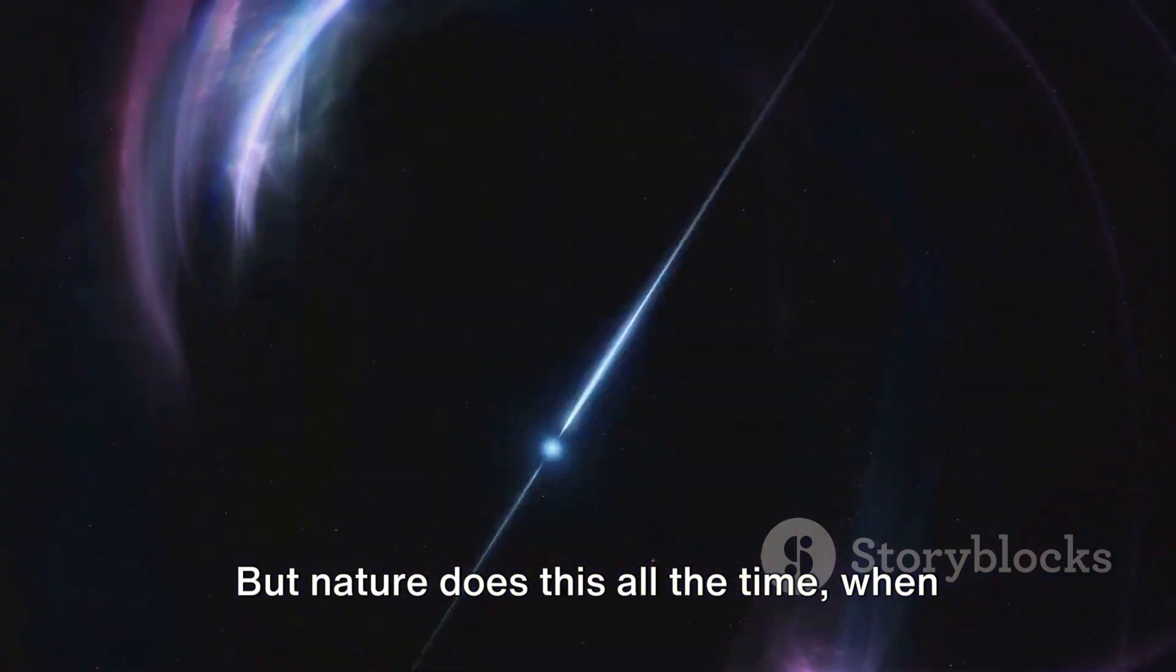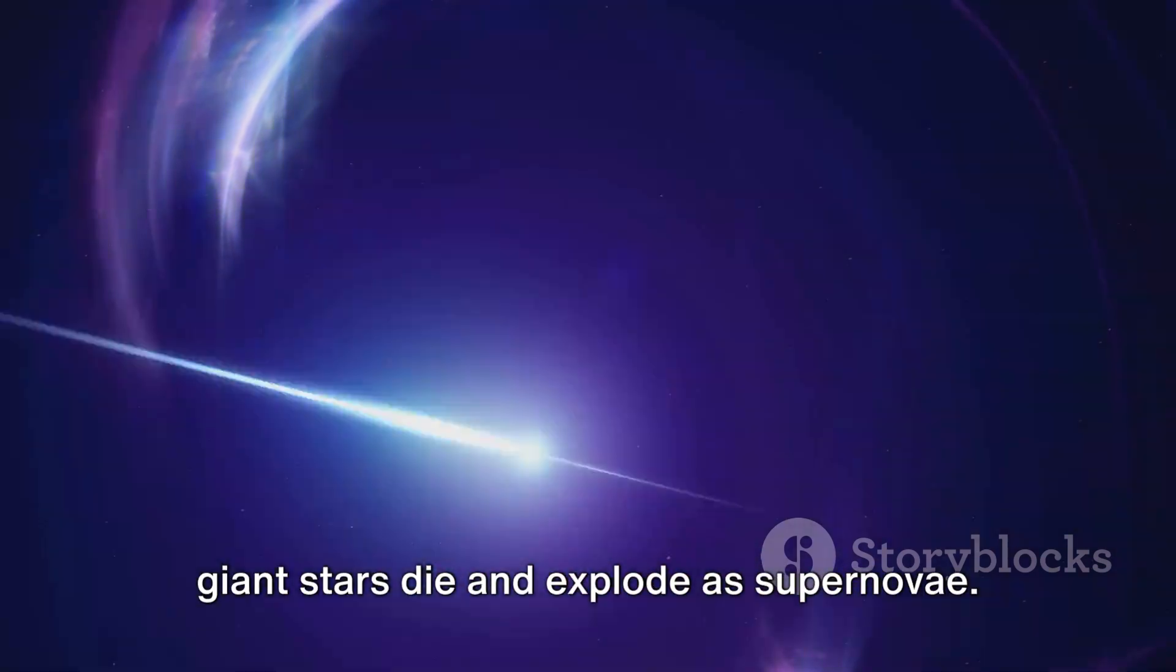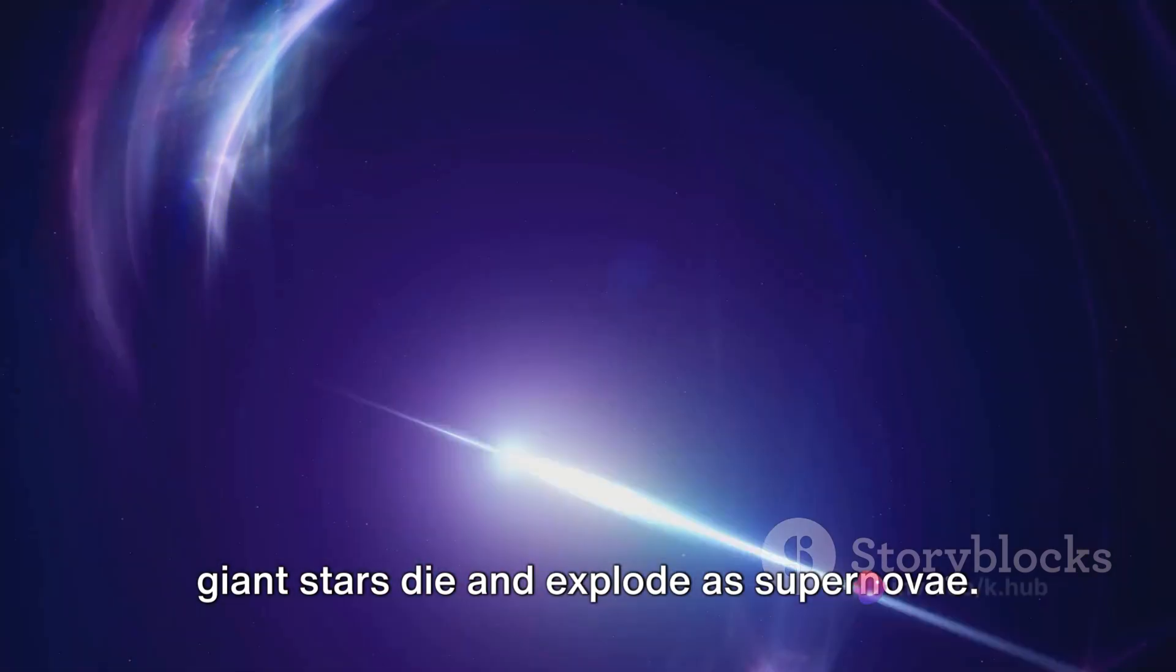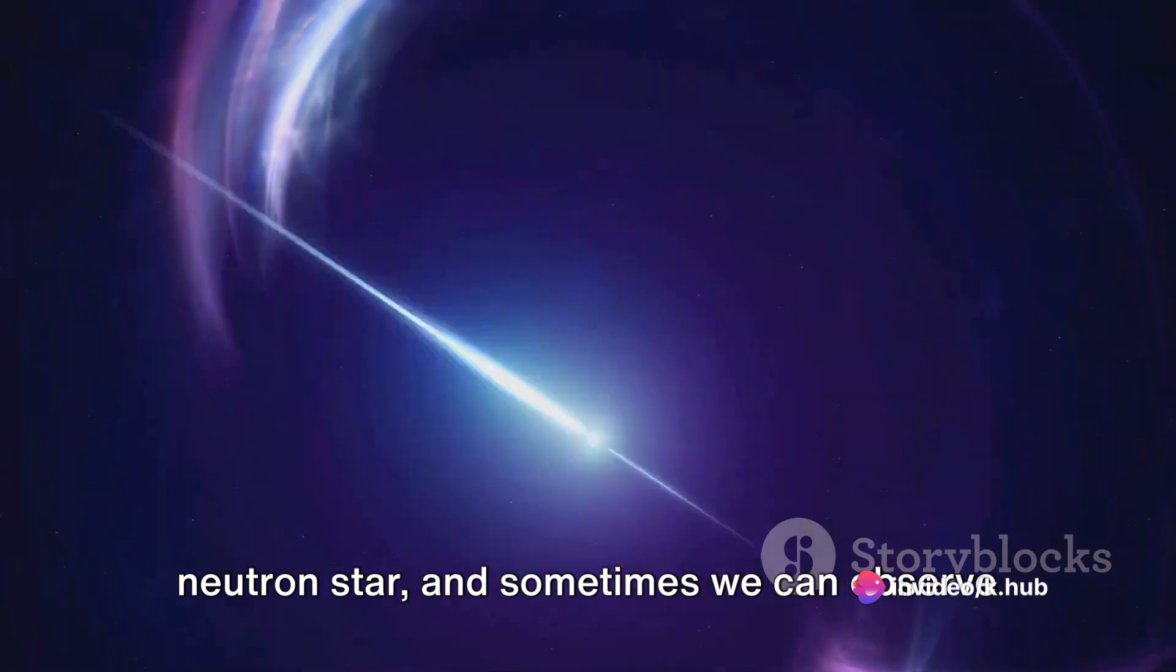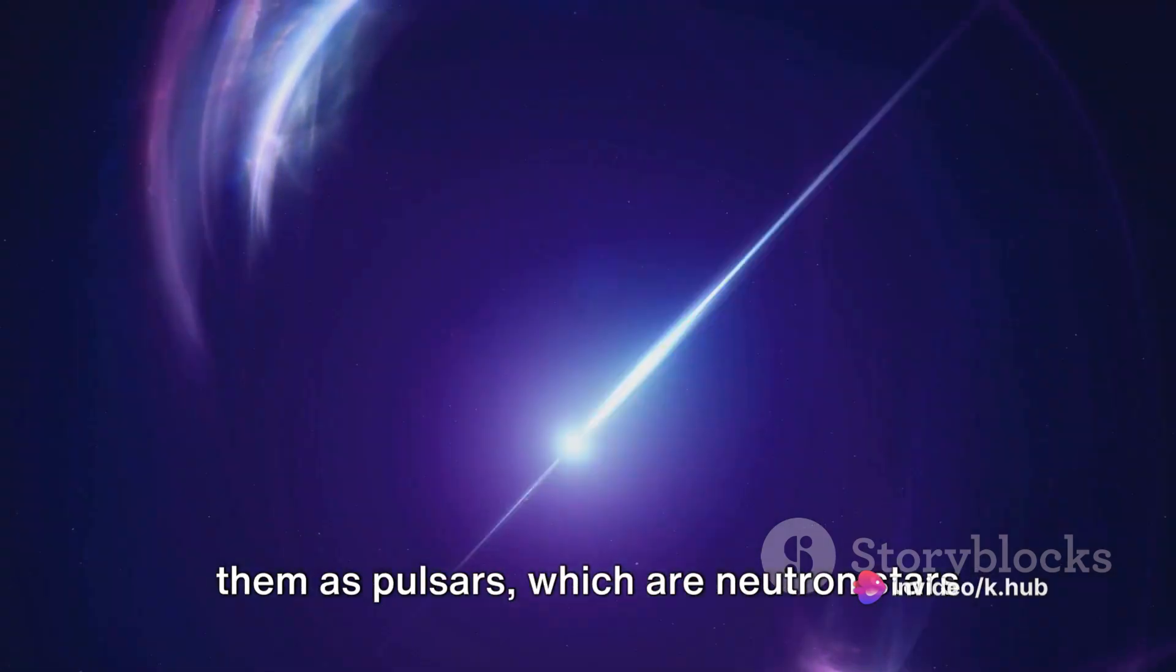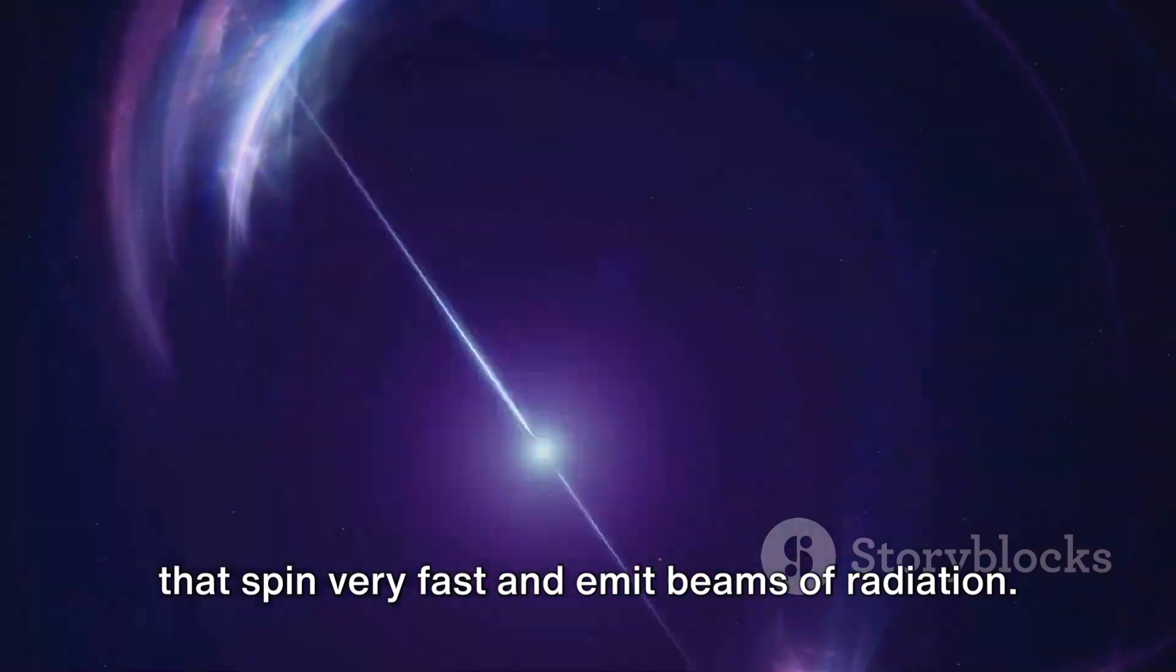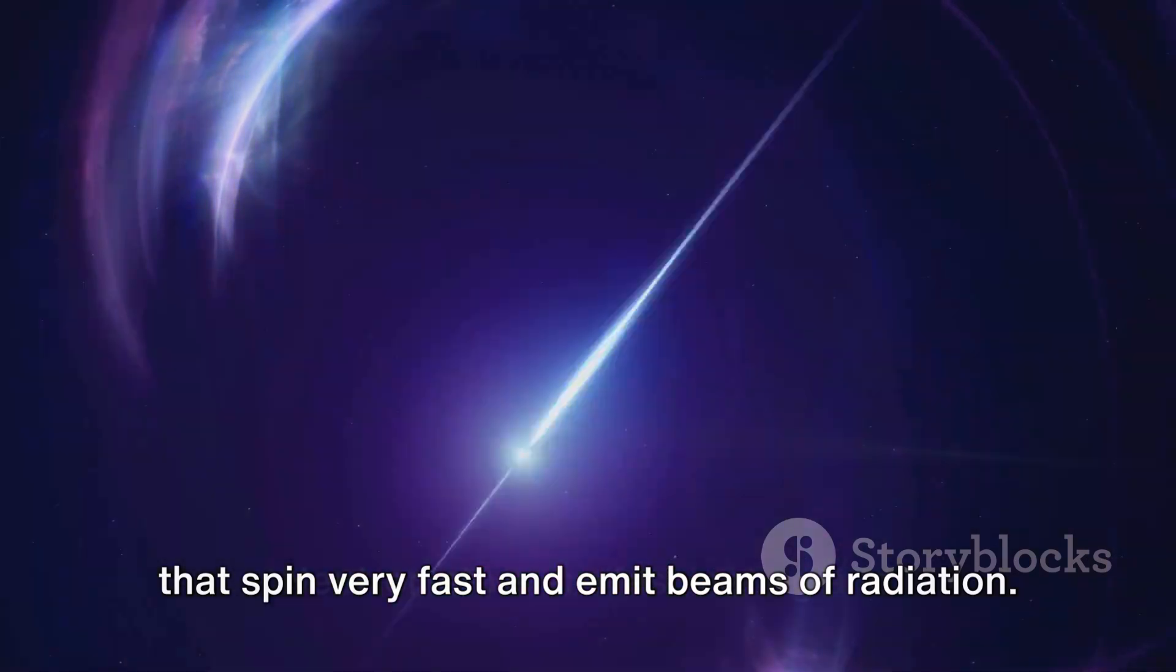But nature does this all the time when giant stars die and explode as supernovae. The core of the star is left behind as a neutron star and sometimes we can observe them as pulsars, which are neutron stars that spin very fast and emit beams of radiation.